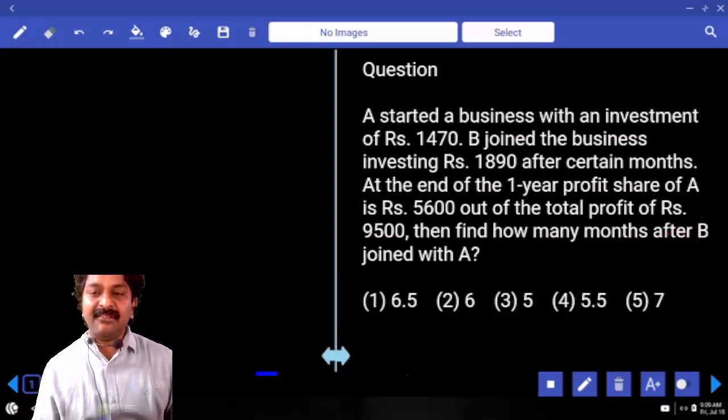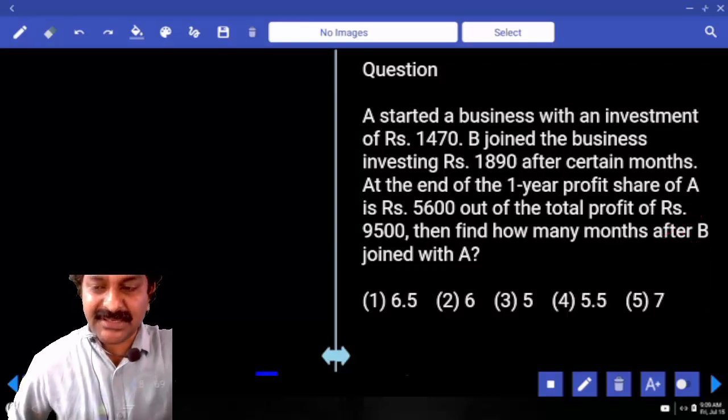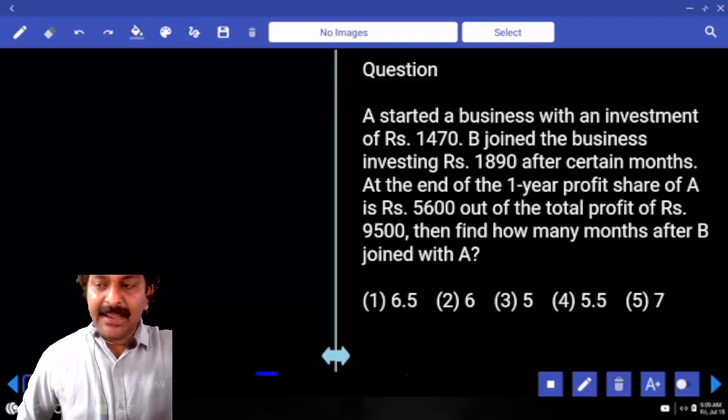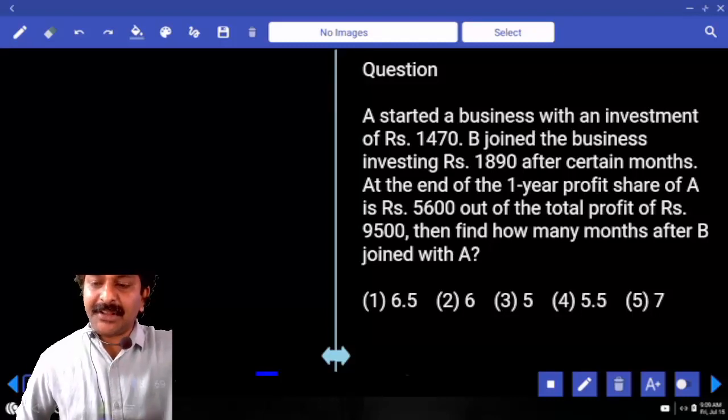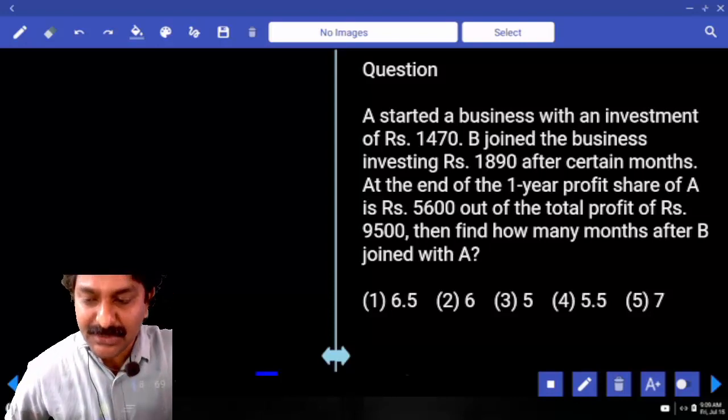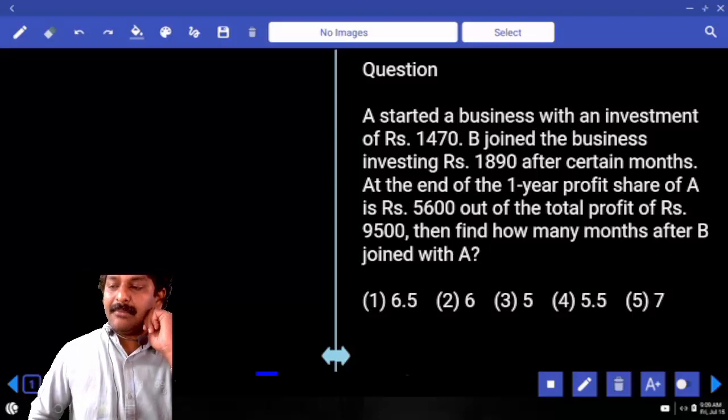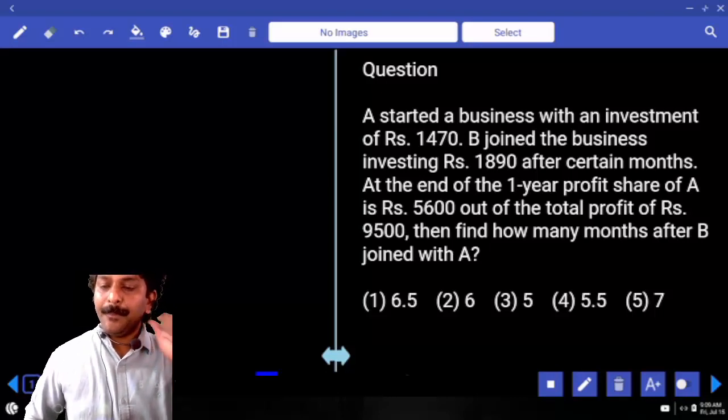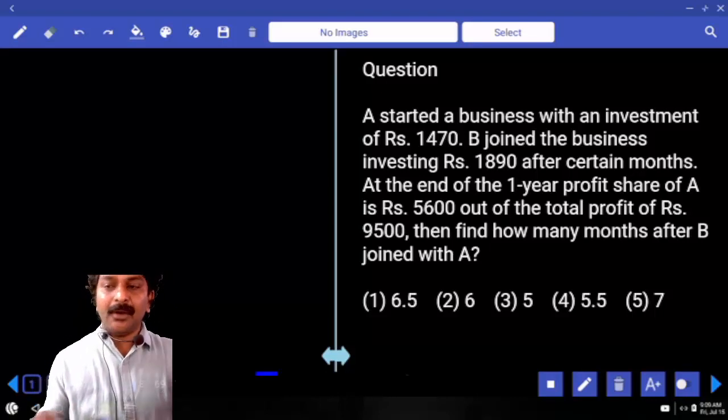A started a business with an investment of 1470. B joined the business by investing 1890. After certain months, at the end of one year, profit share of A is 5600 out of total profit of 9500. Then find how many months after B joined with A.